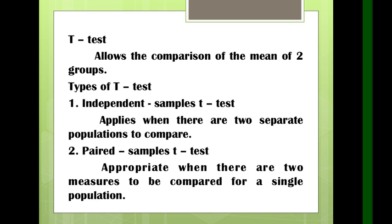The paired sample t-test is appropriate when there are two measures to be compared for a single population. For example, with one section, you give a pre-test before introducing a strategy for a specific topic, then give the post-test at the end and compare the two to see if there is improvement. That is the paired sample t-test — one population but two measures compared. In summary, t-test is used to determine the significant difference between the means of two groups.